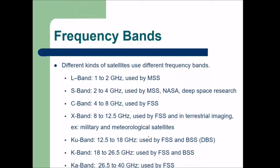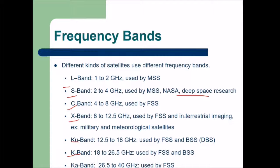Different types of satellites use different frequency bands. The bands include: L band (1–2 GHz), S band (2–4 GHz), C band (4–8 GHz), X band (8–12.5 GHz), and higher bands such as Ku and Ka bands.